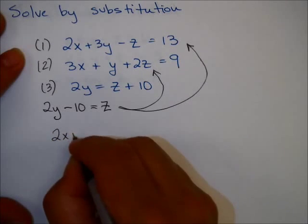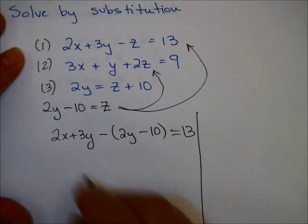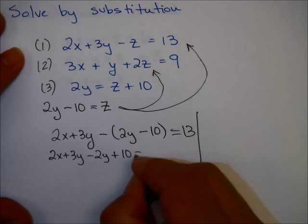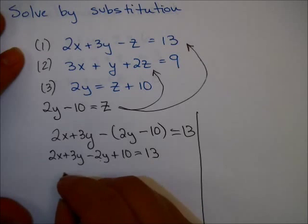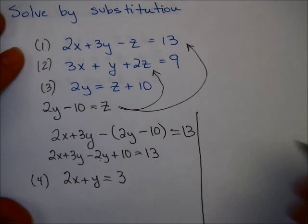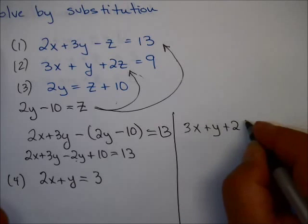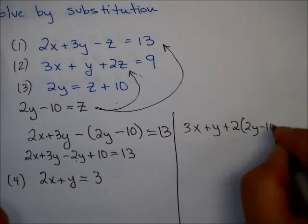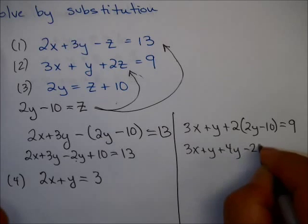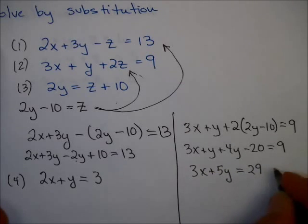Substituting into equation 1 gives me 2x plus 3y minus z — which is minus (2y minus 10) — equals 13. That gives you 2x plus 3y minus 2y plus 10 equals 13. So 2x plus y, subtracting 10 from each side, gives 3. That is equation 4. For plugging into equation 2, I'll have 3x plus y plus 2 times z, where z is 2y minus 10, equals 9. That gives 3x plus y plus 4y minus 20 equals 9, so 3x plus 5y equals 29. I'll call that equation 5.